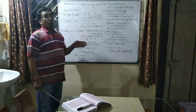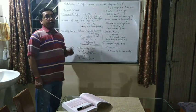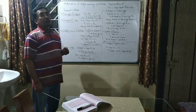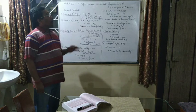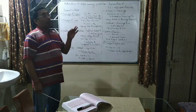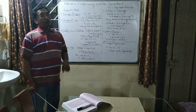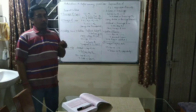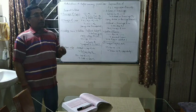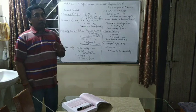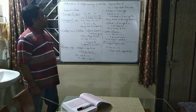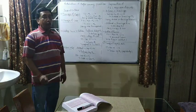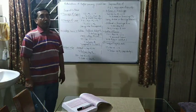As you know, in sole proprietorship business, only trading and profit and loss account is prepared. In case of partnership business, one more account is prepared after profit and loss account, that is profit and loss appropriation account.